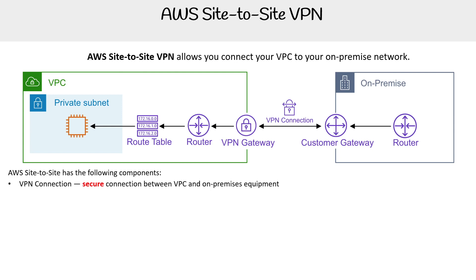The first is the VPN connection — this is the secure connection between the VPC and the on-premise equipment. You have your VPN tunnel, which is not illustrated here, but we'll see it in another slide as it's visualized in another diagram. This is the encrypted connection for your data.